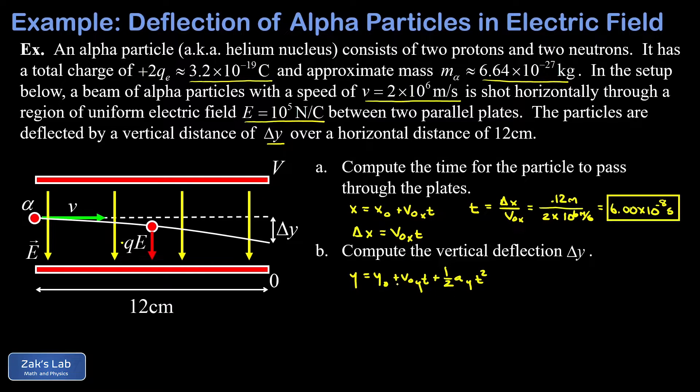And there's a couple of things to clean up here. Y minus Y0 is delta Y, so I'm going to write delta Y on the left-hand side. And the second thing I want to clean up is that V0Y is equal to 0.